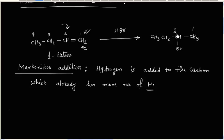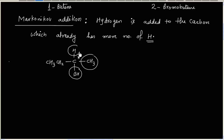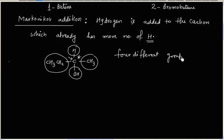So the product is 2-bromobutane. Now, if you see 2-bromobutane, this has an optically active carbon because there are 4 different groups attached to this carbon: one side we have ethyl, another we have hydrogen, another we have methyl, and bromo. So this carbon is a chiral carbon.